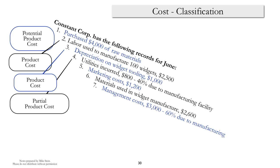Depreciation on widget tooling — the idea is whether the cost is related to the manufacturing process or to another activity of the firm. As long as it's part of the manufacturing process, the tooling is going to be assigned to product costs. Utilities are often for common resources, say a building, so they have to oftentimes be apportioned — some portion assigned to products and the remainder assigned to period costs.